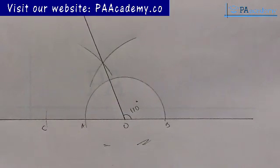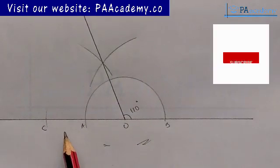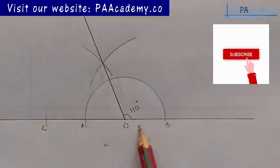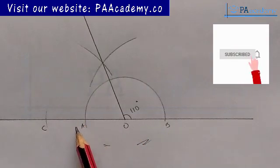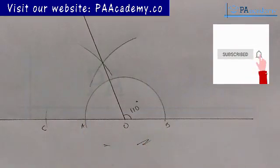If for any reason you are not getting 110 degrees, then you have to check your bisection and your angles from those points.